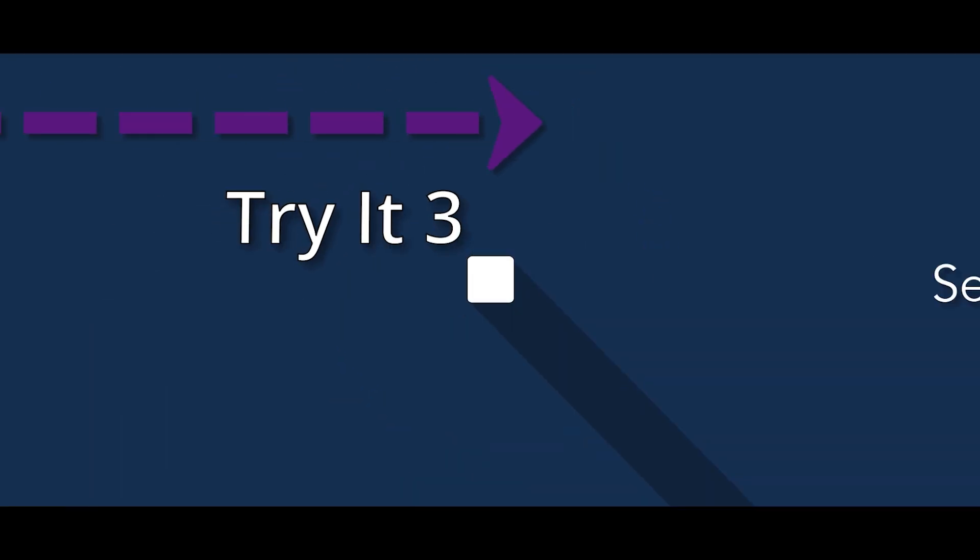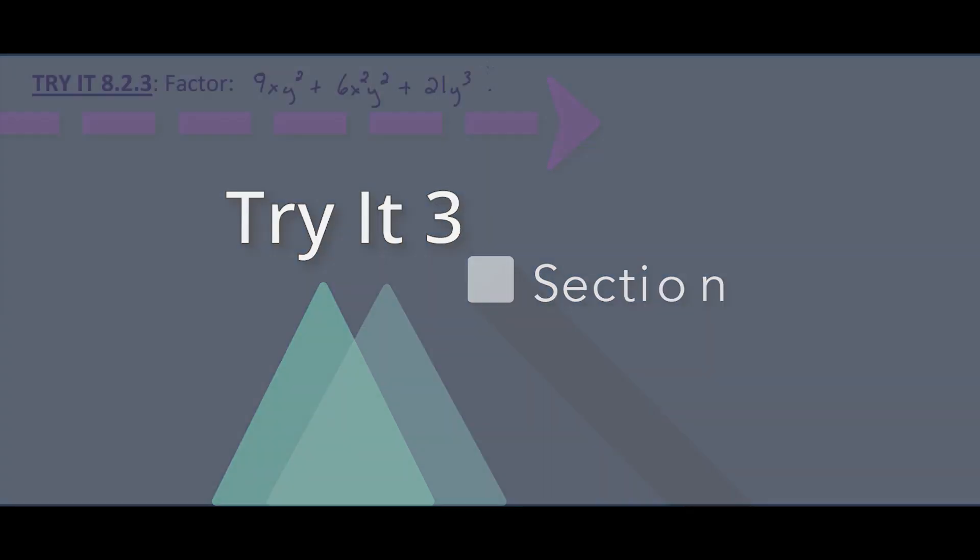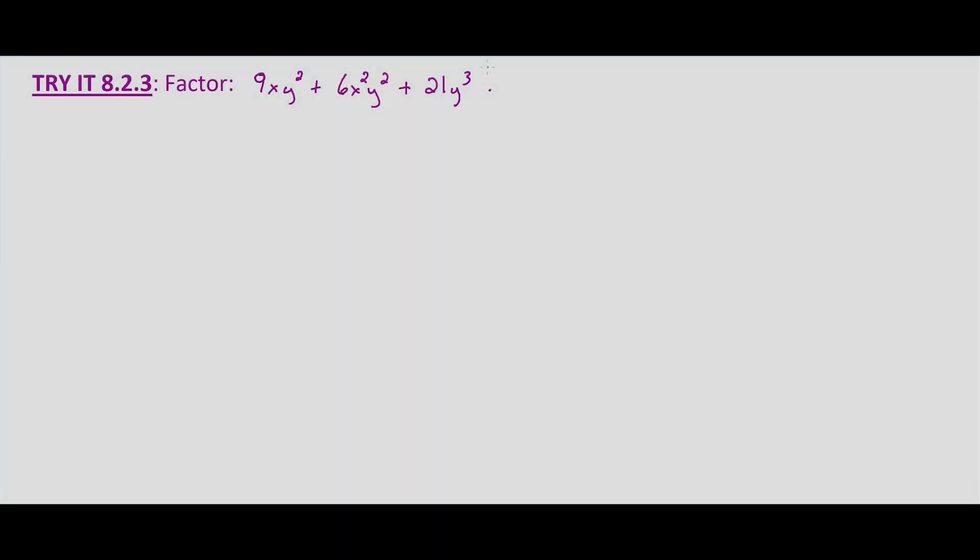Now we're looking at factoring polynomials, and the main purpose of these first problems in factoring polynomials is to look for the greatest common factor. So essentially we're looking at the same thing as the first few examples we looked at, only now it's in a polynomial with addition or subtraction in order to factor it out using the distributive property in reverse.